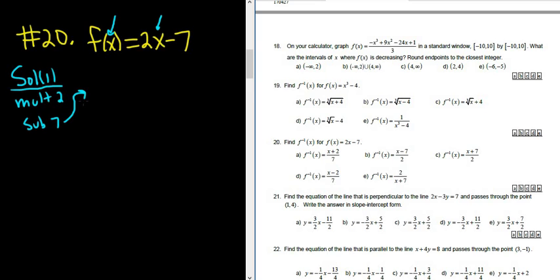So in reverse order, undoing this, because that's what a function and its inverse do, they undo each other. The opposite of subtracting 7 is adding 7, and the opposite of multiplying by 2, or the inverse operation, is dividing by 2.